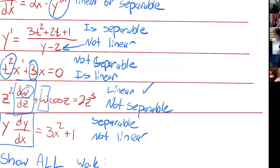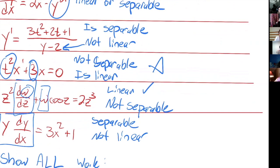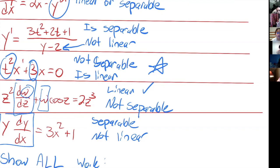A student asks to confirm: you can have a function of the dependent variable, like plus 3x, but you just can't have it squared — the instructor confirms that's right. Another student asks about the equality to zero not fitting the linear form, and the instructor confirms: you could have a function f of x which is zero and that's okay.